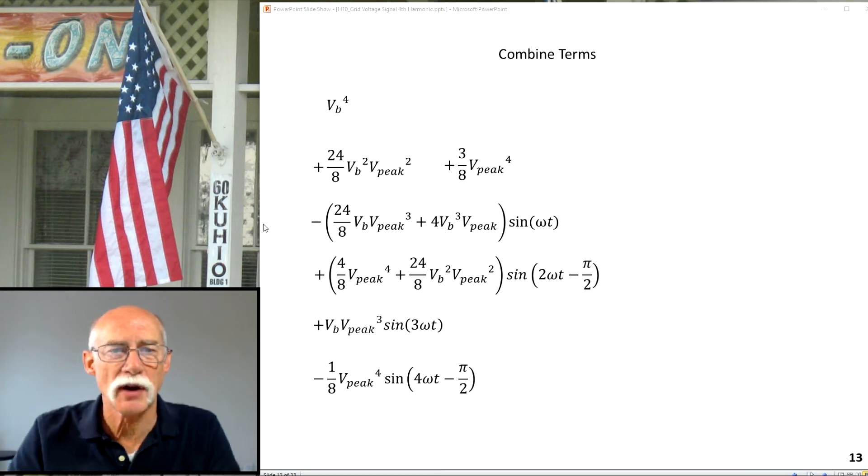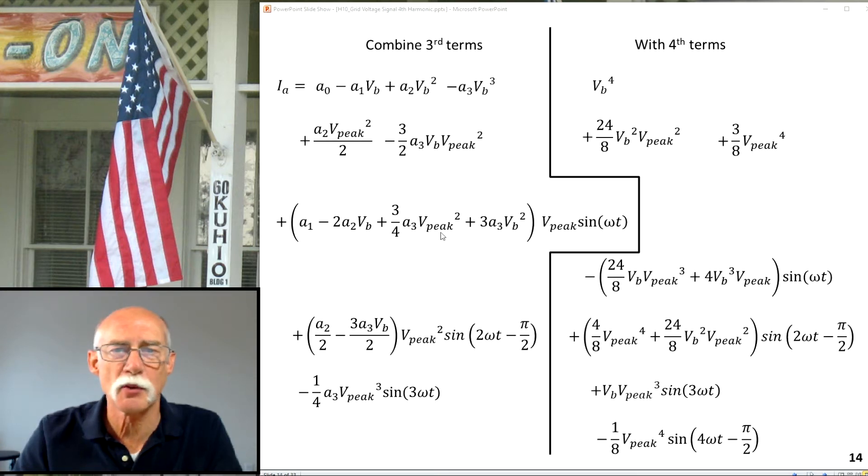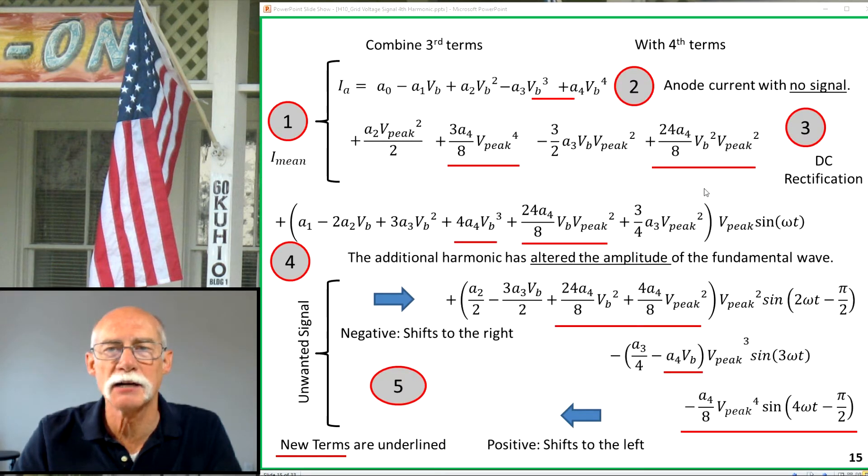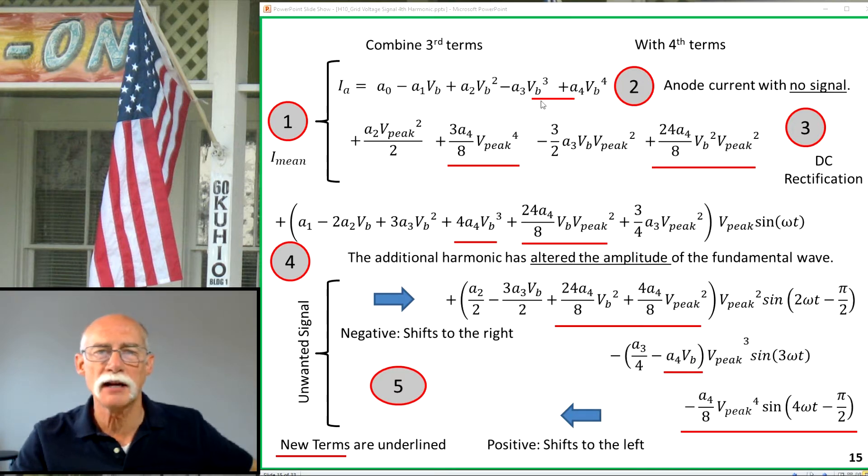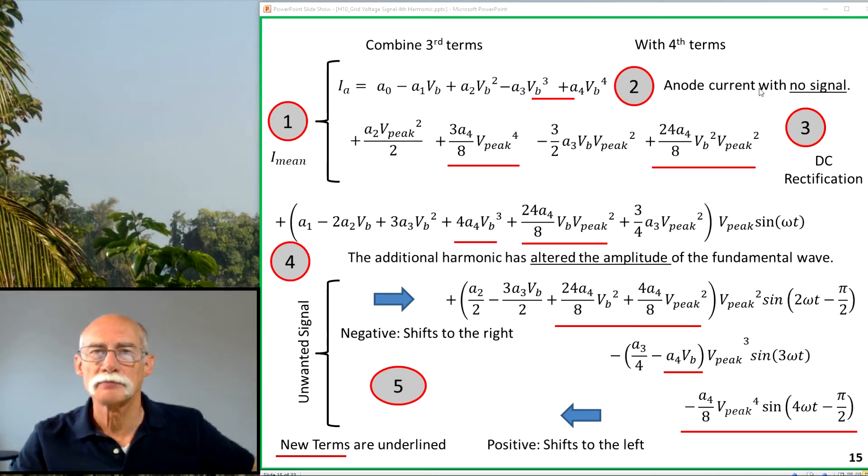I combine my terms so I have my fundamental, my second order, third, fourth. I have my third order terms from the last video, my fourth order terms from this video. I combine them and we have the same five talking points. I mean consists of I sub zero and that's this term here. These terms, here's the new terms with no signal. And then the DC rectification, I've added in two terms to that. The fundamental frequency has new terms. The signal has become altered again. It gets more complex.